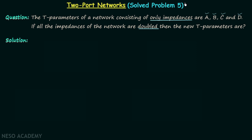The question is very simple to understand. There is a two-port network having only impedances and the T parameters, or the transmission parameters, of the network are A, B, C and D. We are required to find the new T parameters when all the impedances of the network are doubled. Pause the video and try to solve this question on your own.